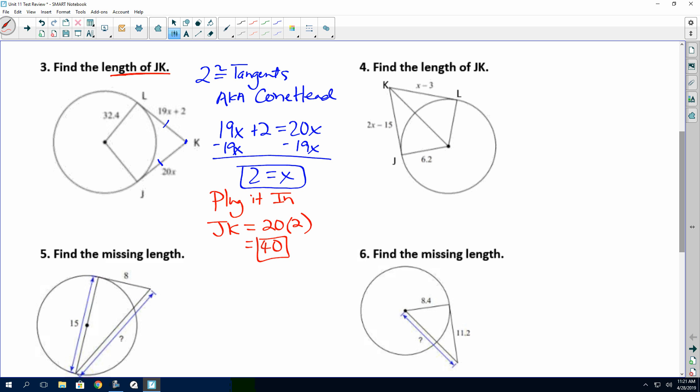Don't forget that step. That will happen on the test for sure. So JK is the 20 times 2, which is the x, 20x. So this comes out to be 40. So again, they want you to find the length of JK using conehead. So hopefully we see our JL is congruent to our JK.